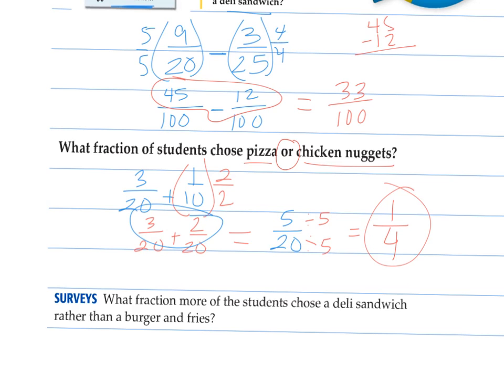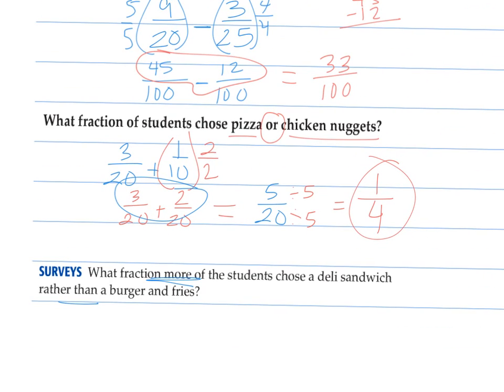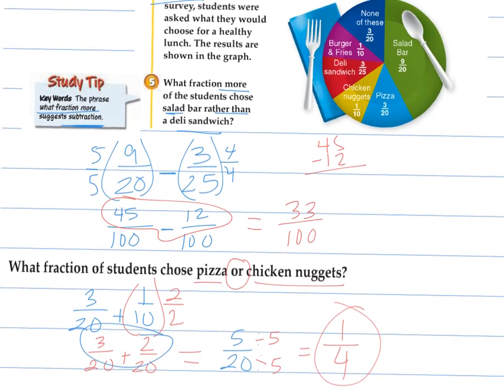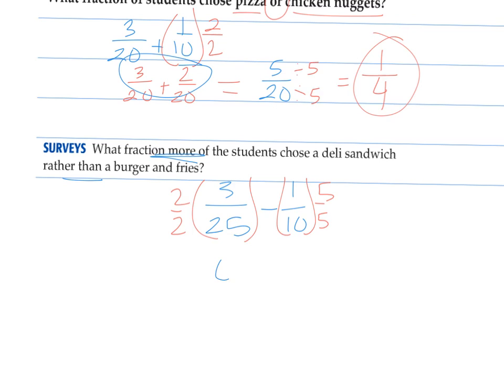Last one. What fraction more of students chose a deli sandwich rather than a burger? So remember that what fraction more rather than tells us we're going to be subtracting. So we look up here, deli sandwich is three twenty-fifths, burger and fries is one tenth. Their least common multiple is going to be fifty, so I change this by two, this one by five, for six fiftieths minus five fiftieths, which is one in every fifty students chose that more.